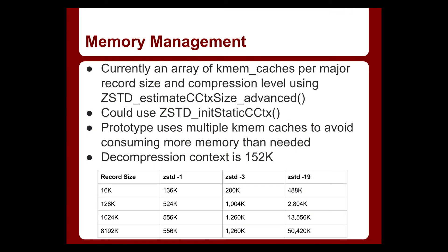There were a few other challenges with memory. Unlike LZ4, which has a fixed context size for compression and decompression — a fixed 16 kilobyte memory allocation in the ZFS version, so there's one KMEM cache — with ZStandard, the different levels and different record sizes give you different context sizes for compression and decompression. The approach I took was to create an array of KMEM caches based on three compression levels: the minimum, the default, and the maximum.